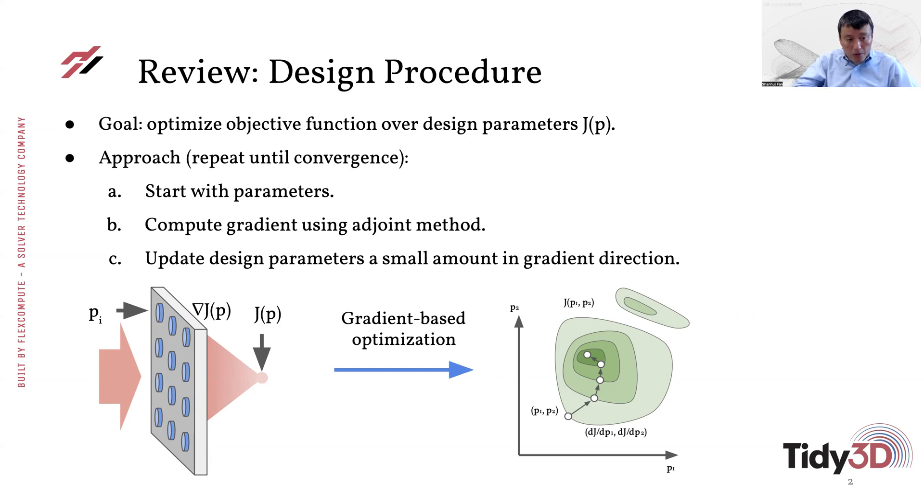So for example, if we like to design a lens, one way to imagine this objective function is just the intensity at a focal point, and you would like to make the intensity as large as possible for a given incident wave. And if the incident wave is a plane wave, then it tells you something about focusing.